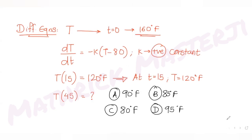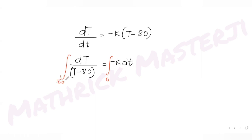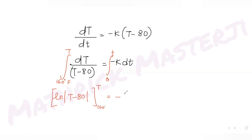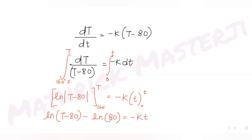At time t equals 0 the temperature is 160 degrees Fahrenheit, so that becomes the lower limit, and the upper limit is temperature T at any time t. Integrating — since the integral of 1/x is the natural log of x — it becomes natural log of (T minus 80), with limits from 160 to T, equals minus k times t, with limits from 0 to t. Solving this gives: ln(T minus 80) minus ln(160 minus 80), which is ln(80), equals minus kt.